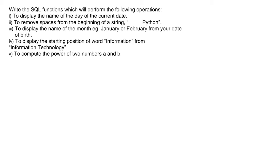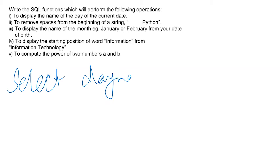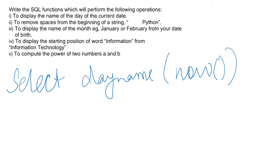What we need is today's date and the name of the day. So what we are going to do is write: SELECT DAYNAME — DAYNAME comes under date functions. Inside the bracket we'll just write NOW(). So this is the answer to the question. The NOW() function gives us the date and time of this particular moment.